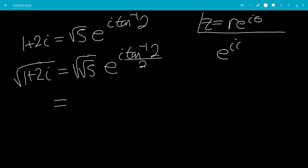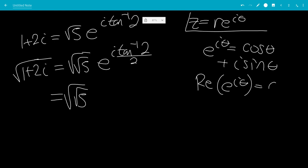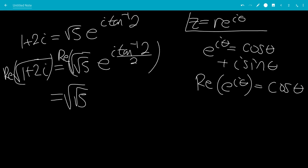e to the i theta is cosine theta plus i sine theta. So this will be square root of the square root of 5. And if we're looking at the real part of e to the i theta, the i just goes away, so it's just cosine theta. So, the real part we're looking for is just the square root of the square root of 5 times cosine of inverse tangent of 2 over 2.